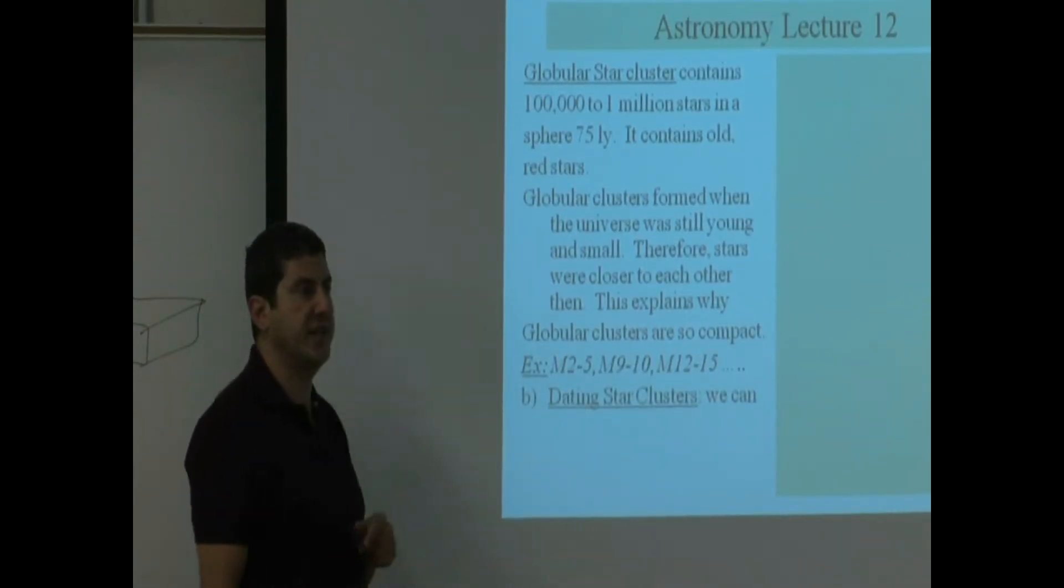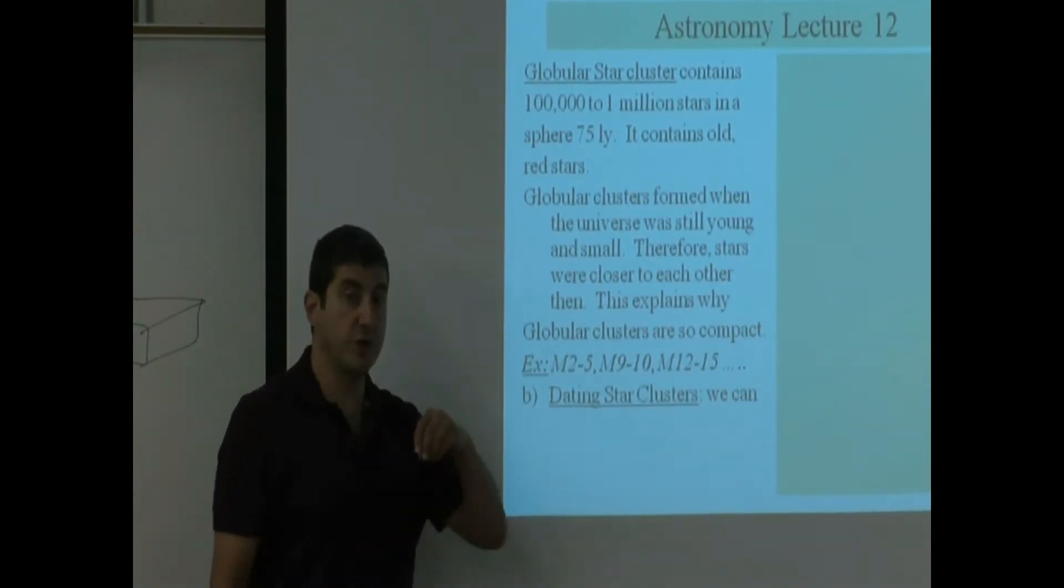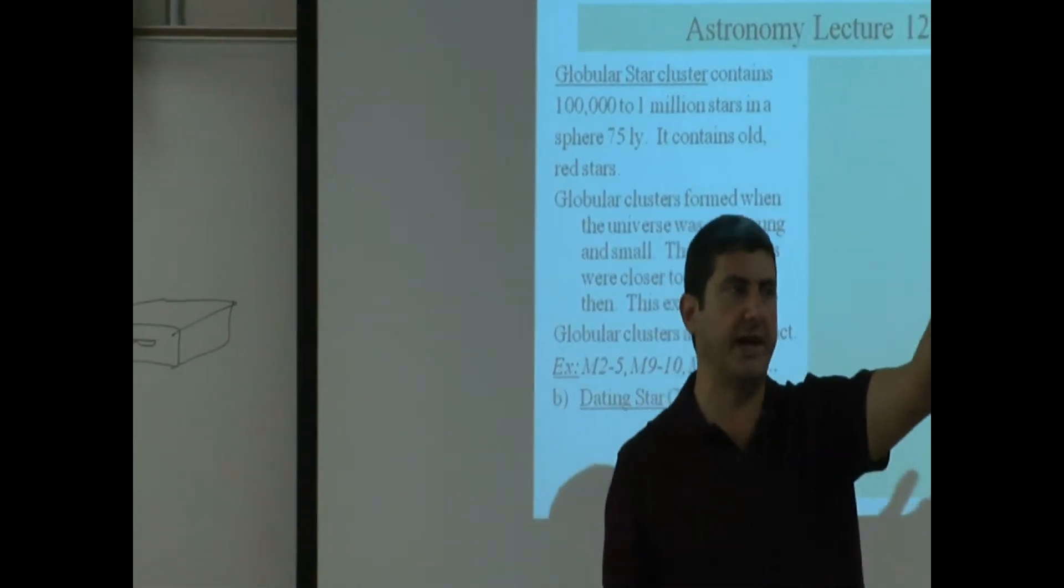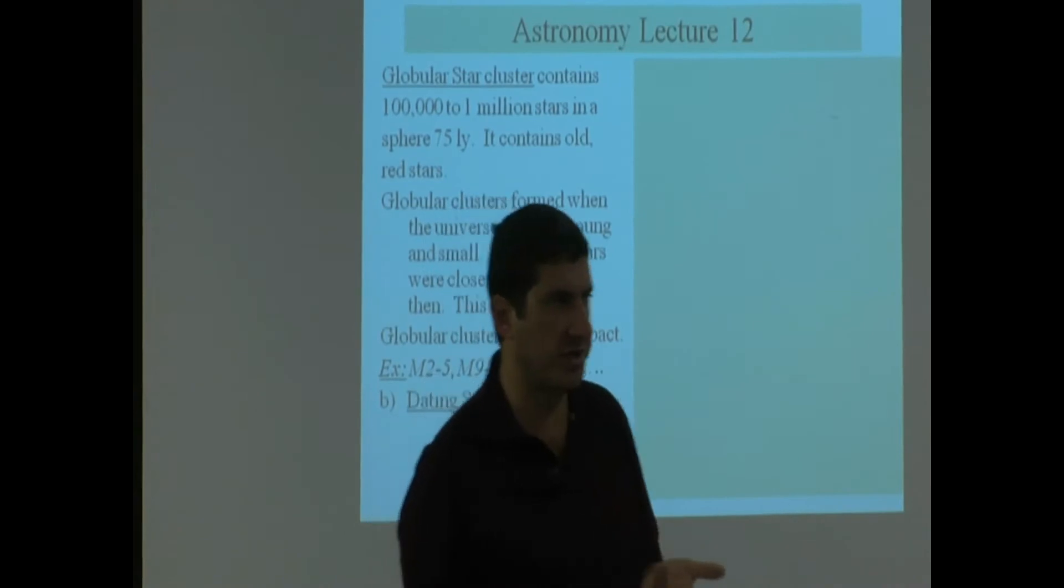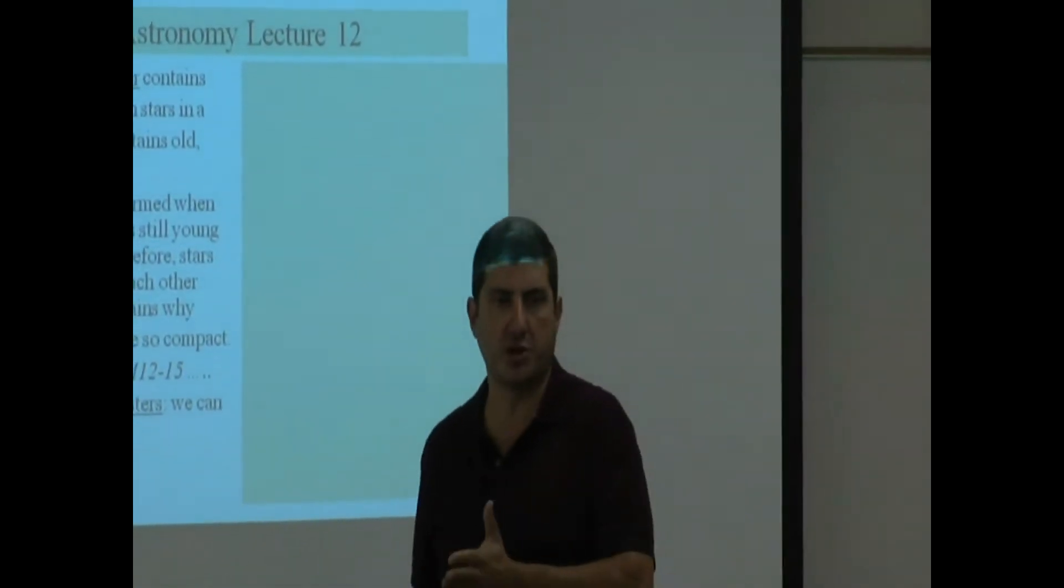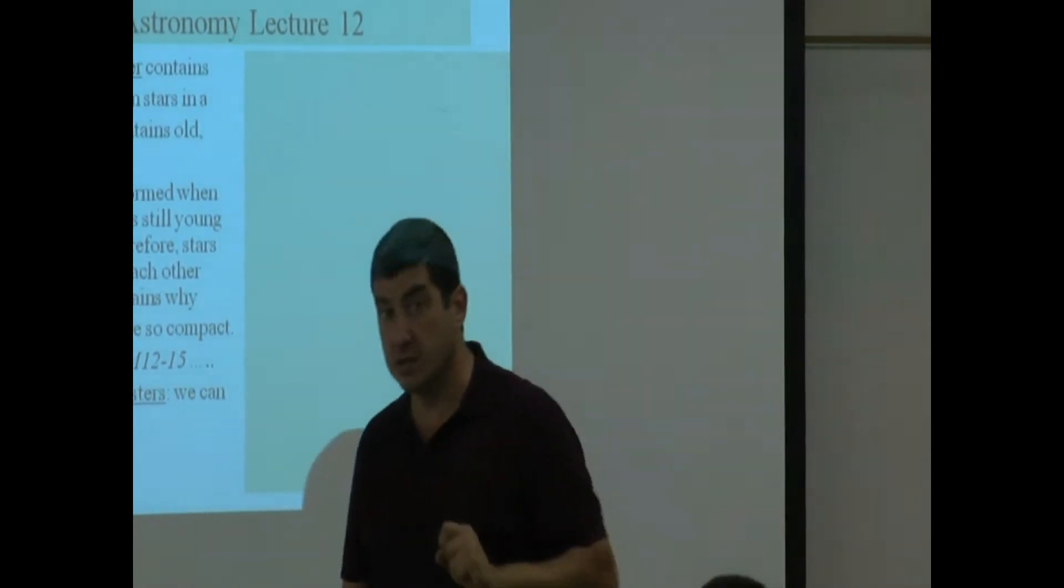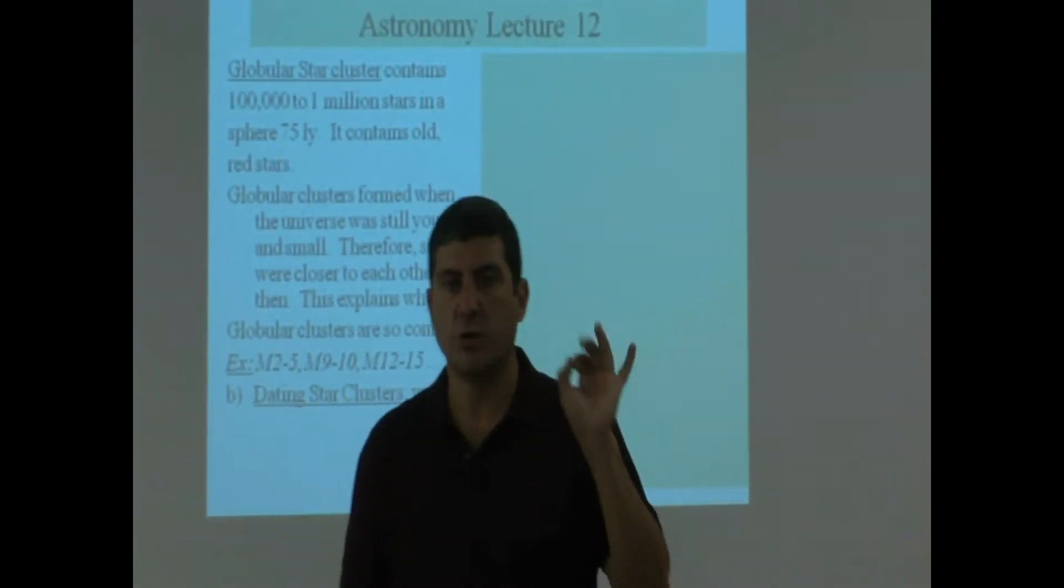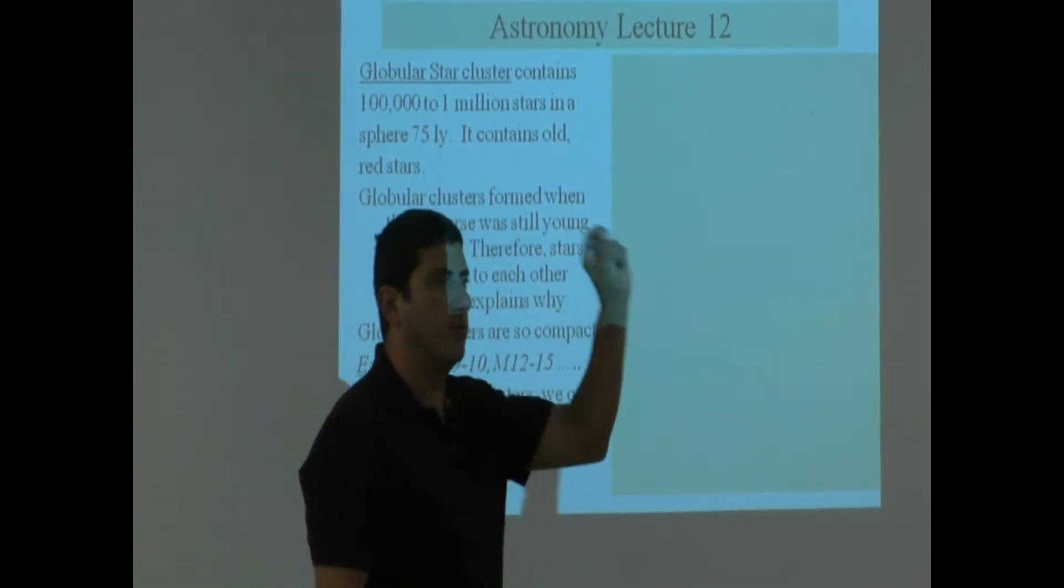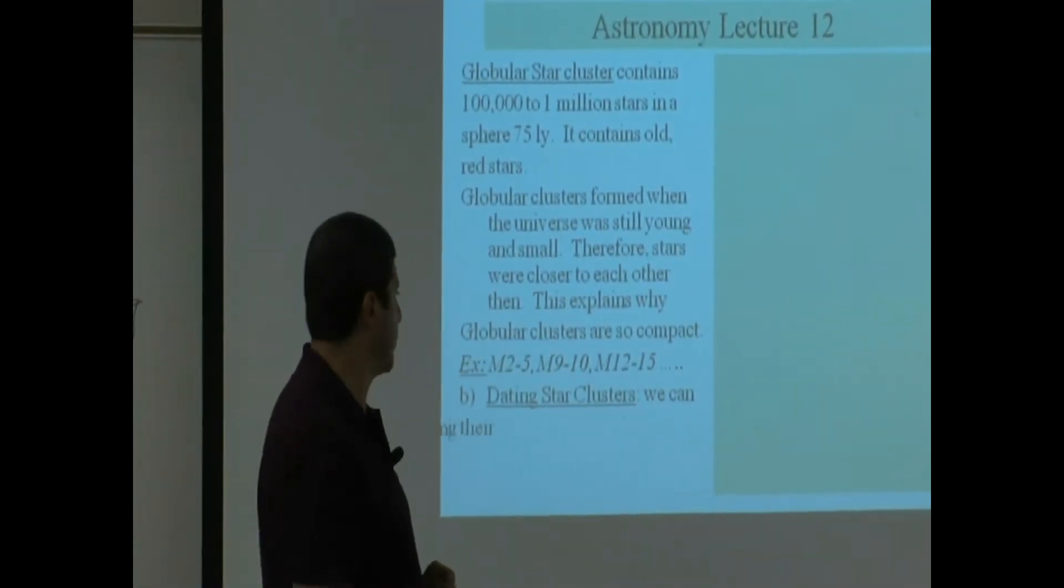This technique is called the technique of dating star clusters. If we want to know how old the star cluster is, one of the things we can do is just visually look at it and see are there any blue stars in there. If not, then generally it's going to be an old cluster. There's only red stars. But if we want to be a little bit more specific about it, we can take a sampling of the stars in that cluster and we can now plot them on the HR diagram.